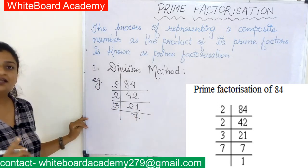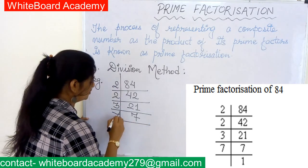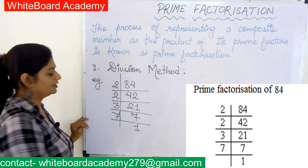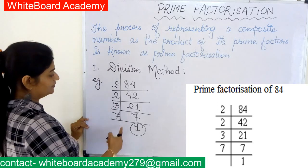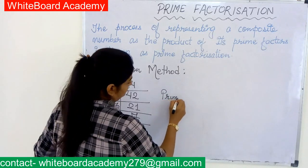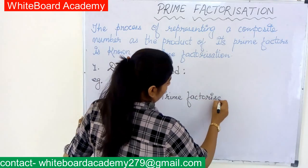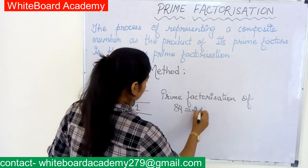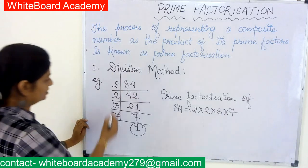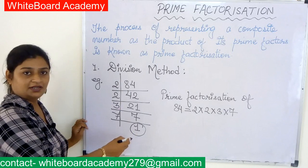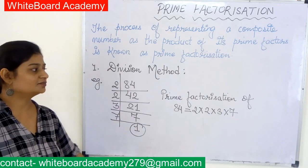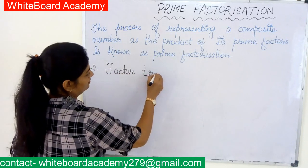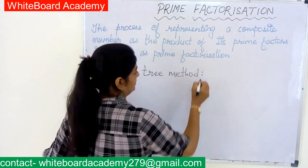Dividing 21 by 3 gives us 7. We continue dividing until we get 1. Now 7 can be divided only by 7, so 7 divided by 7 is 1. The prime factorization of 84 equals 2 into 2 into 3 into 7. Remember, we never use 1 or any composite number when writing prime factorization.